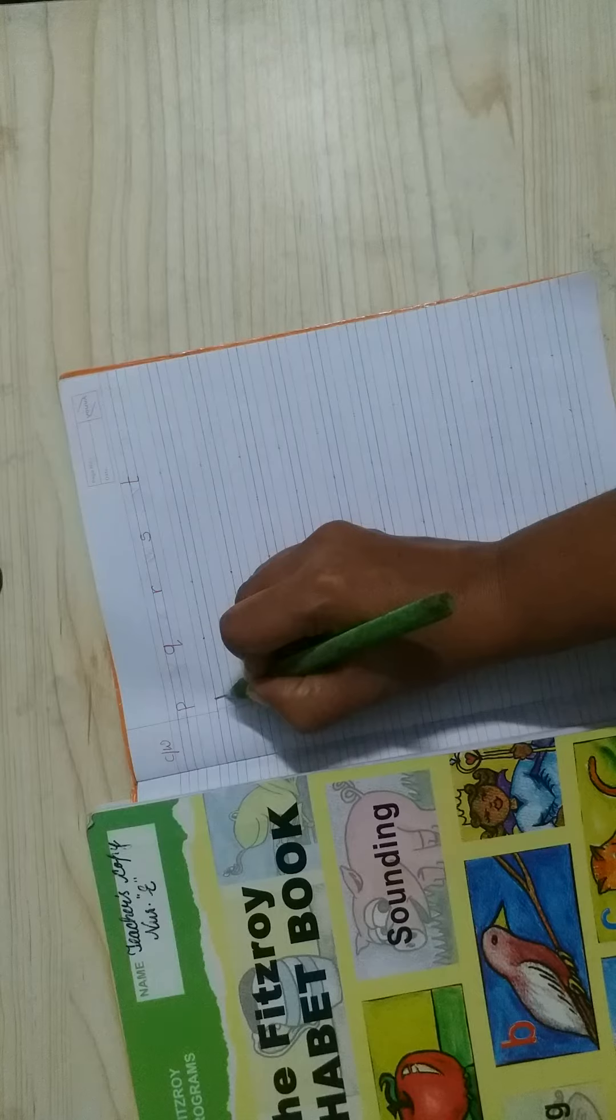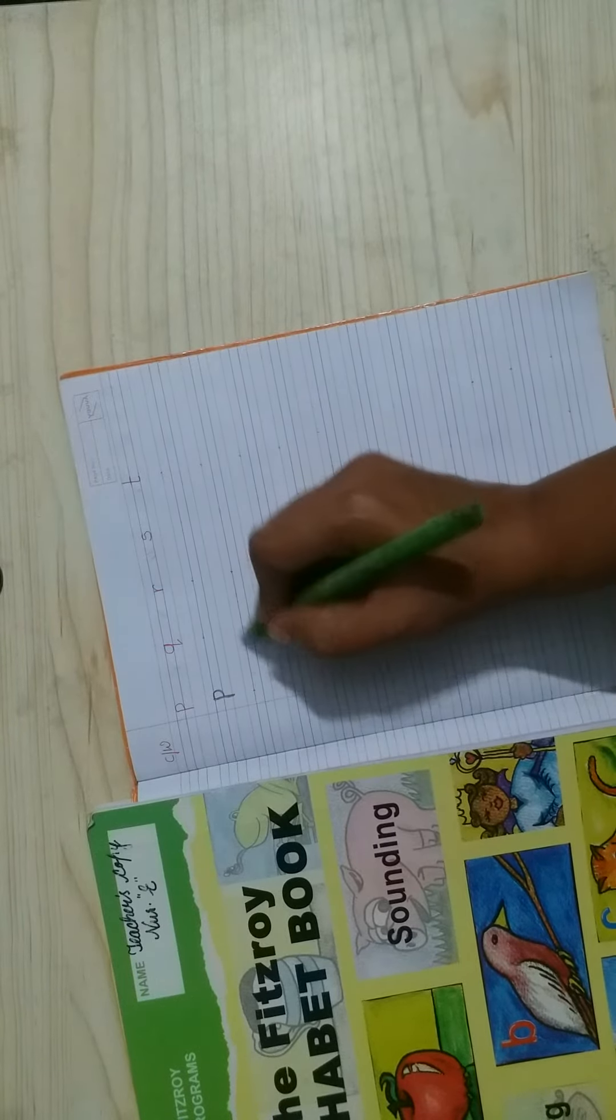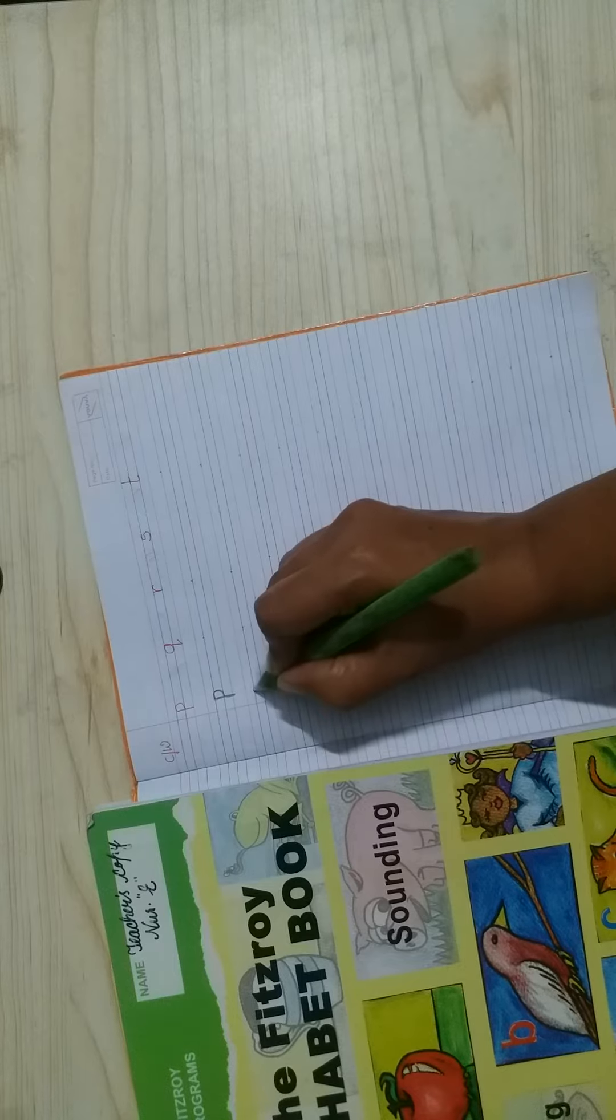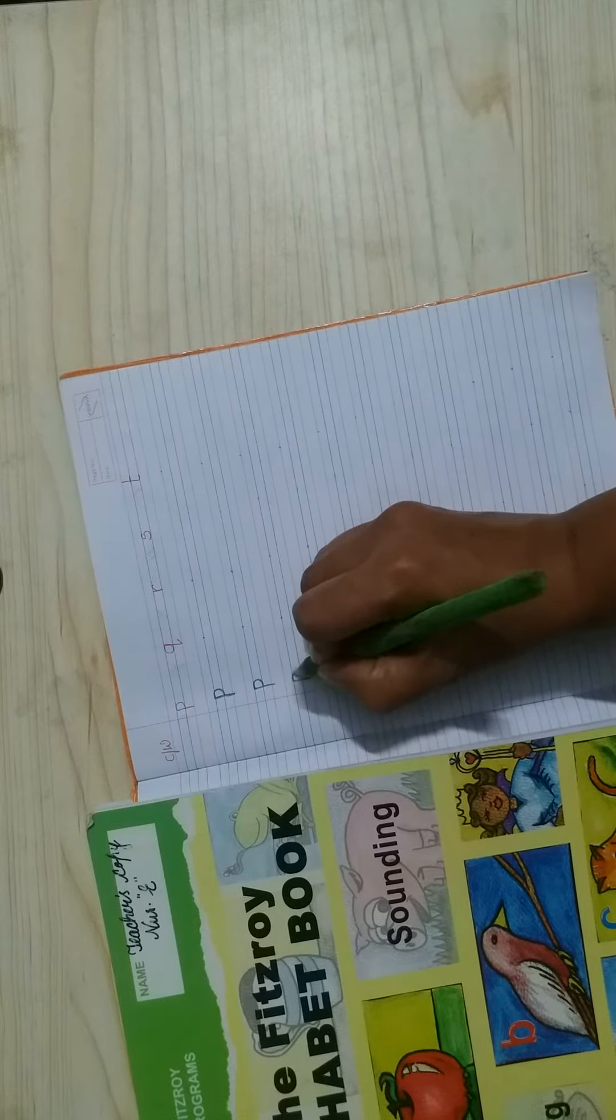Start standing and then make half circle. P for pencil. Like this, you have to make p.